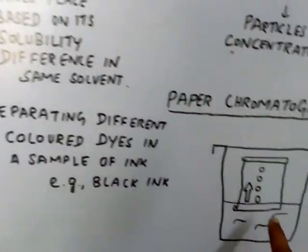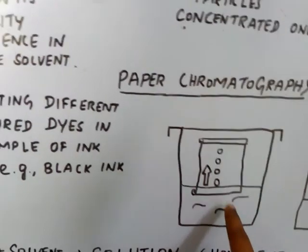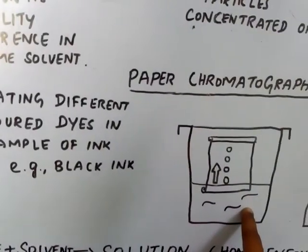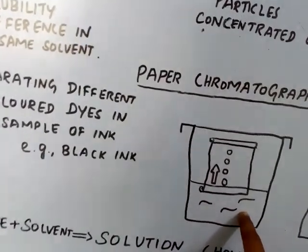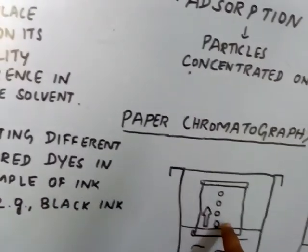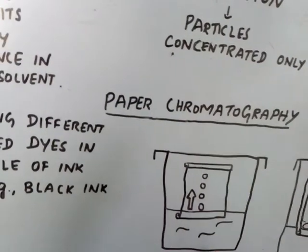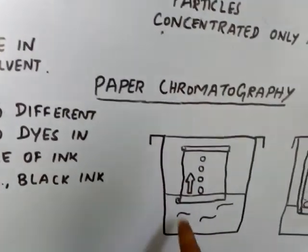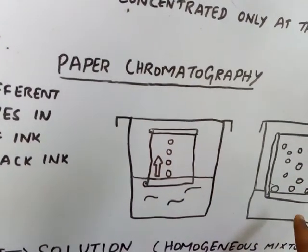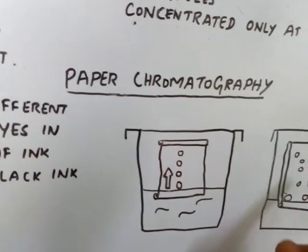Now, this black ink is kept in this paper. Then it is soaked in the solvent. Already what I said? Black ink contains three dyes. All the three dyes are there in the black ink only. Now it is soaked in the same solvent. After that, after some time, based on its solubility,